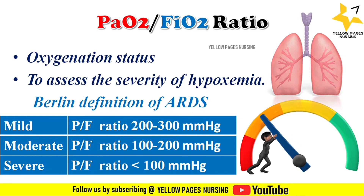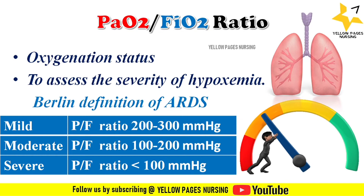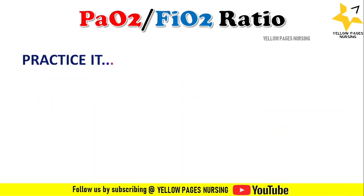The normal PF ratio is greater than or equal to 400, which is equivalent to a partial pressure of oxygen greater than or equal to 80 mmHg.